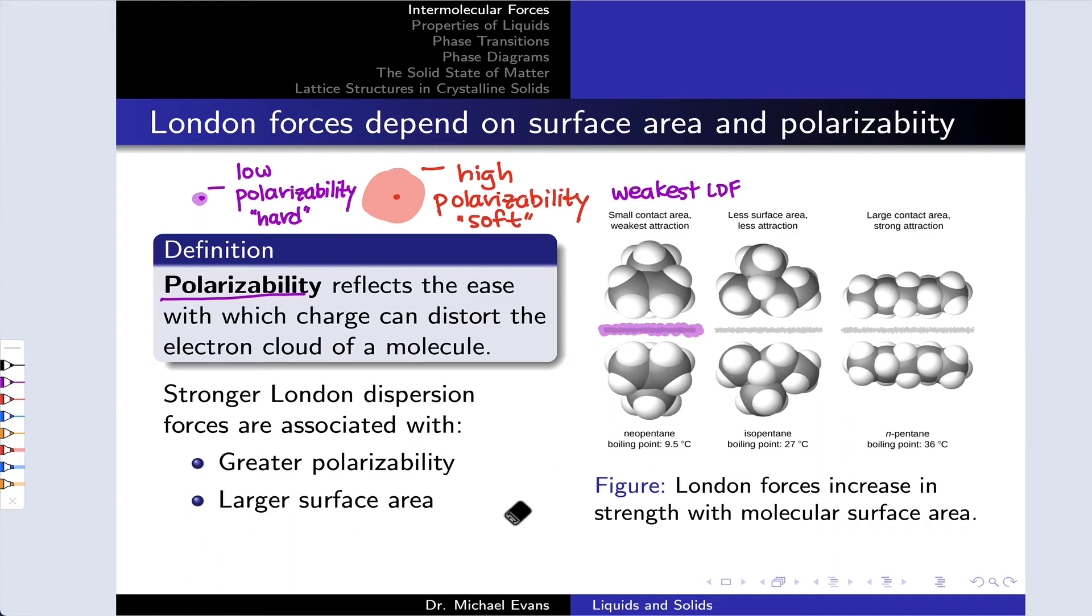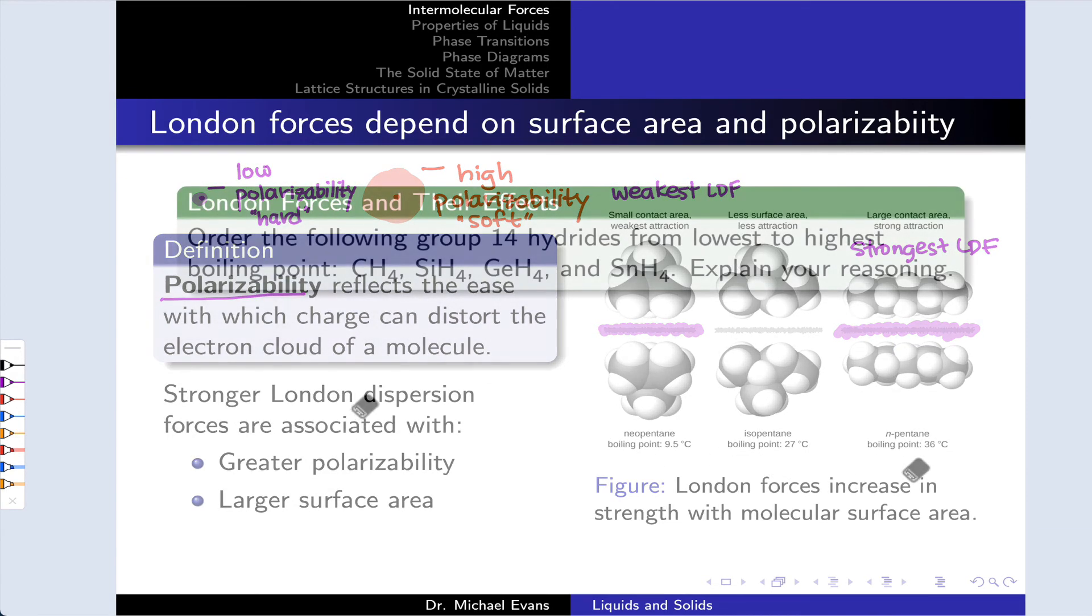The difference in surface area and shape of these molecules can explain this. Neopentane is relatively compact, relatively spherical, small surface area. It's got the weakest London forces. N-pentane, which is long, skinny, cylindrical, has the largest surface area and the strongest London dispersion forces. And isopentane is sort of in the middle and is in the middle in terms of the strengths of London forces.